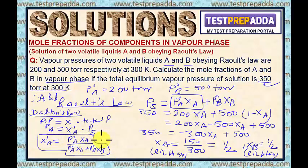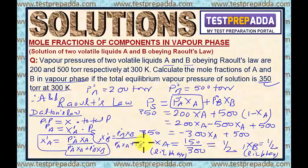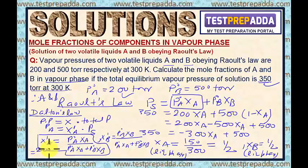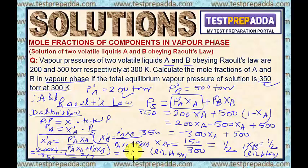Similarly, X'_B = P⁰_B·X_B / (P⁰_A·X_A + P⁰_B·X_B). Substituting values: X'_A = 200 × (1/2) / 350 = 100/350 = 2/7. Therefore X'_B = 1 − 2/7 = 5/7. So the mole fractions of A and B in the vapour phase are 2/7 and 5/7.